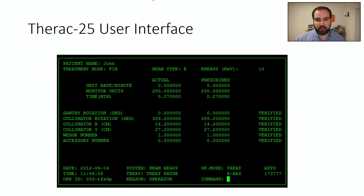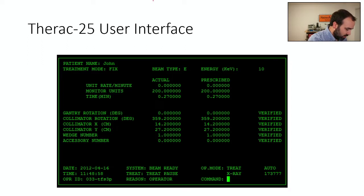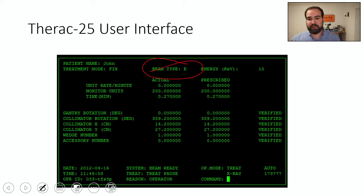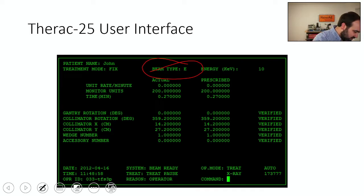The user interface was based on what would now be a quite old computer, but at the time it made sense. The operator would enter information such as the expected rate and the beam type — either an electron beam or an x-ray beam — just by entering 'e' or 'x' to switch between these modes, along with various other settings.